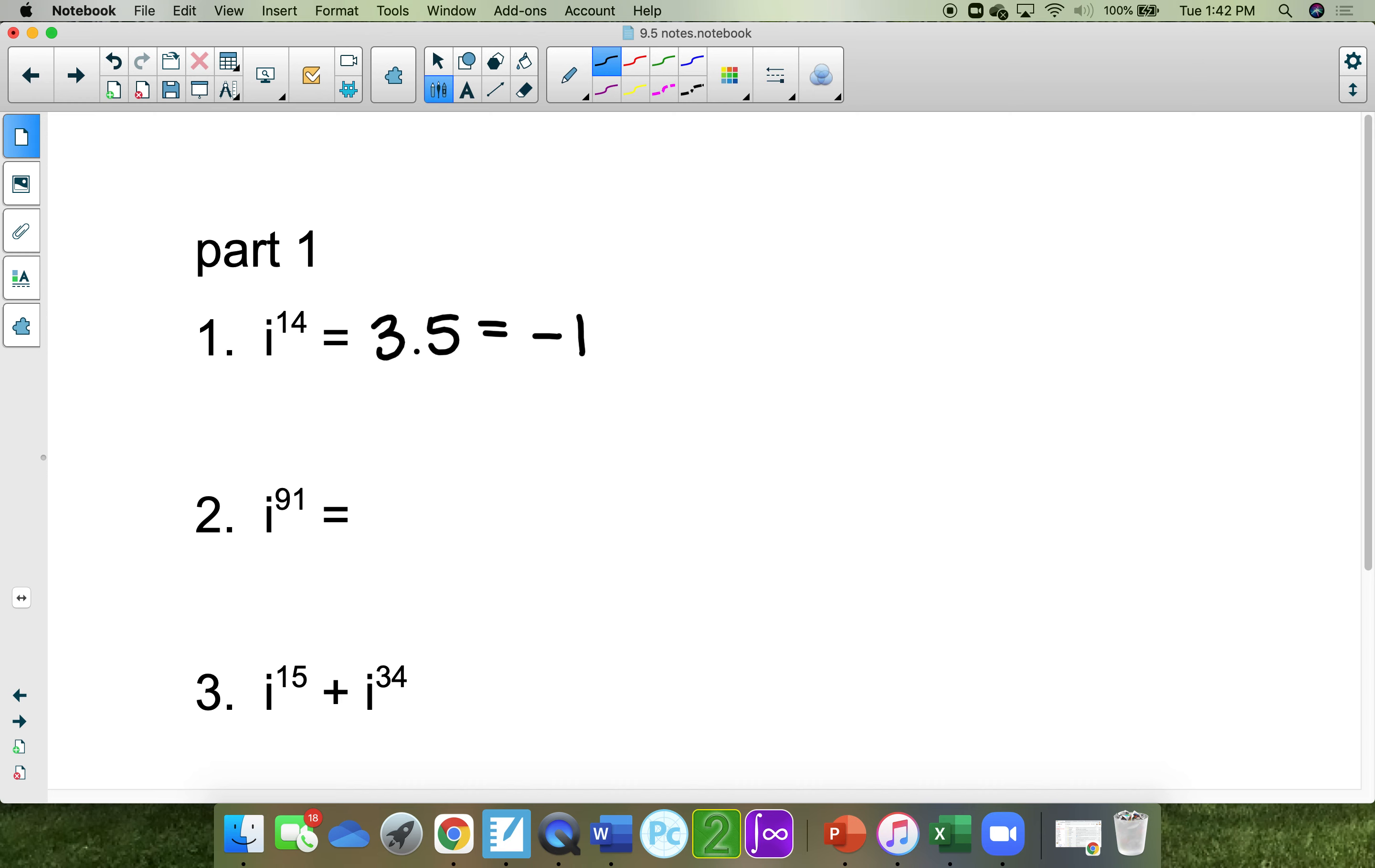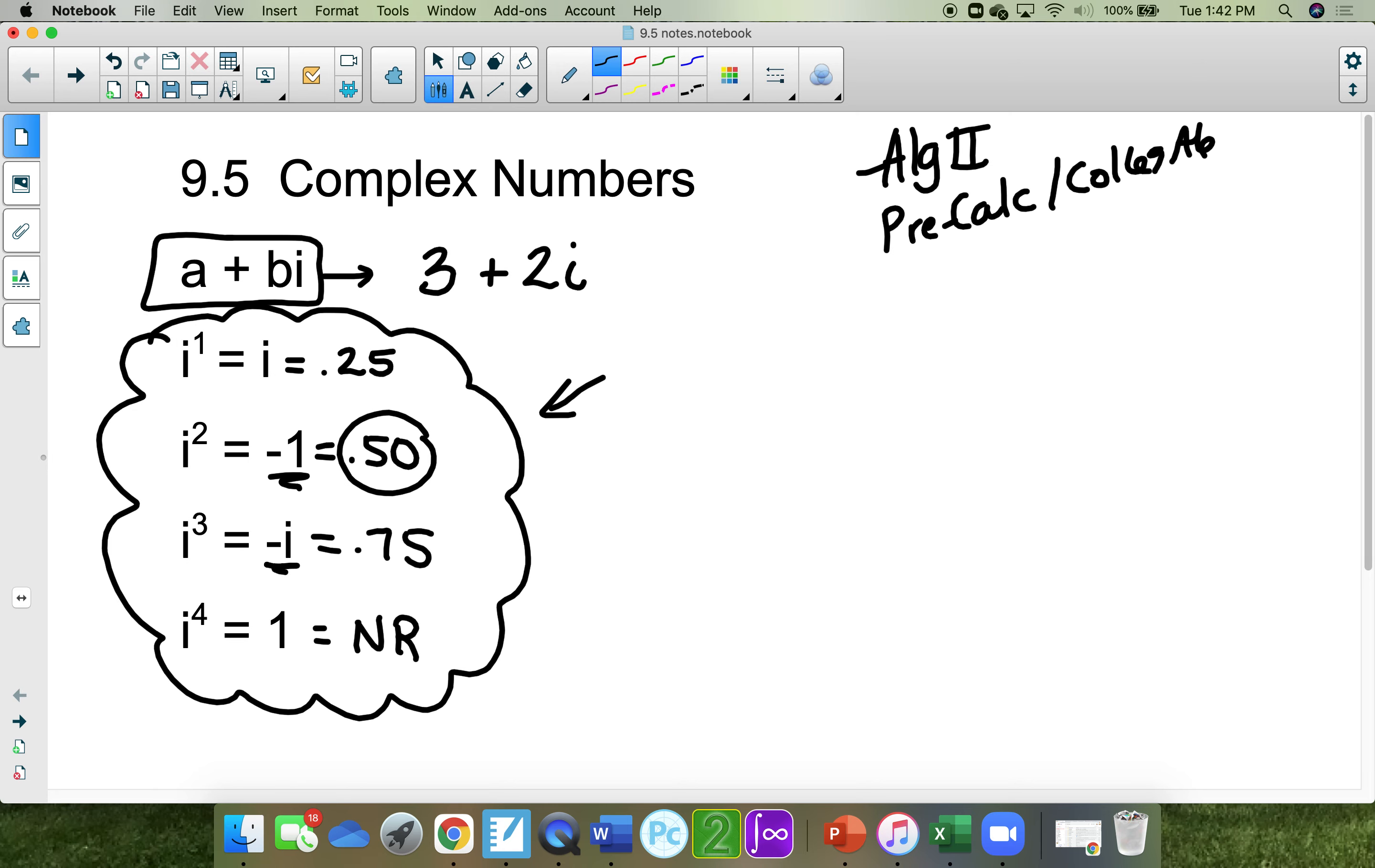i to the 91, 91 divided by 4 is 22.75. That means you would have went through that 22 and 3 fourths of the way down, which would give you a negative i for your answer.